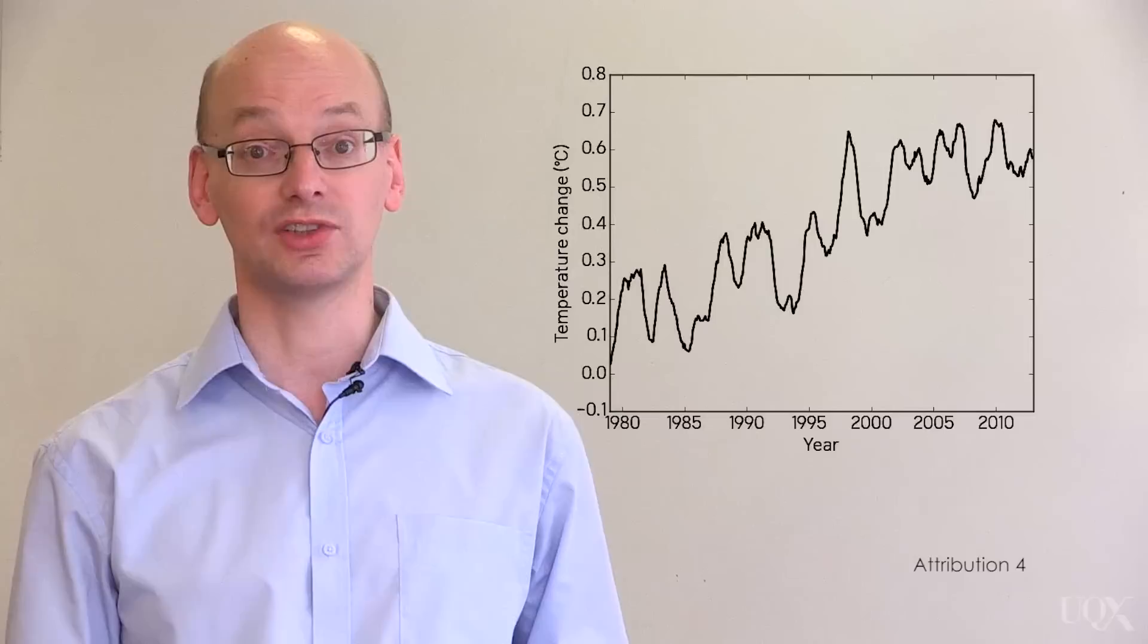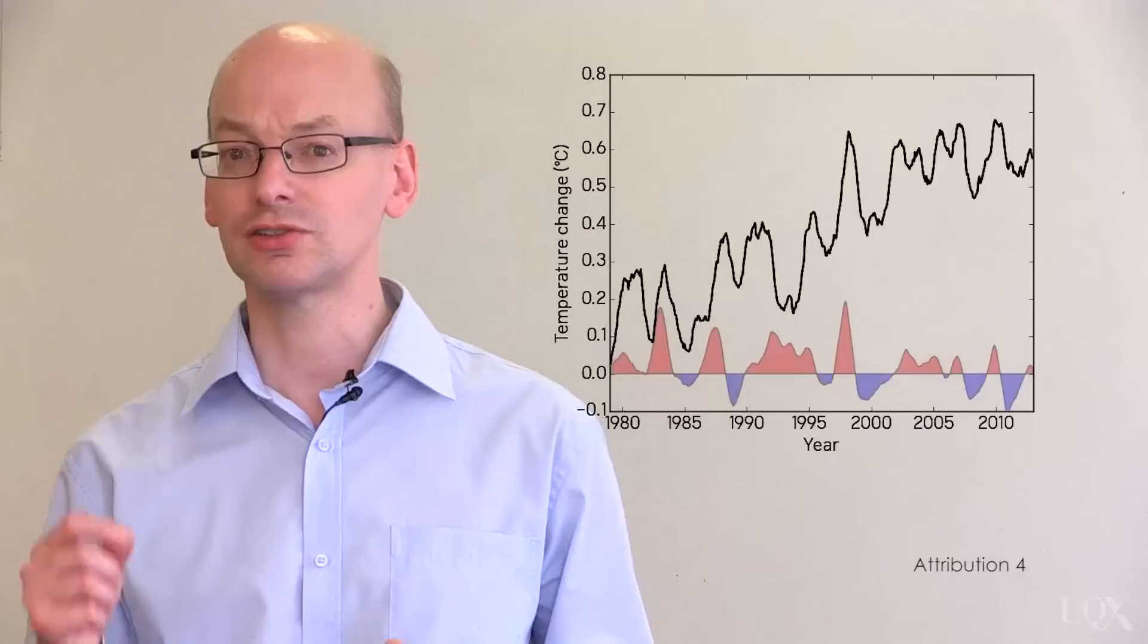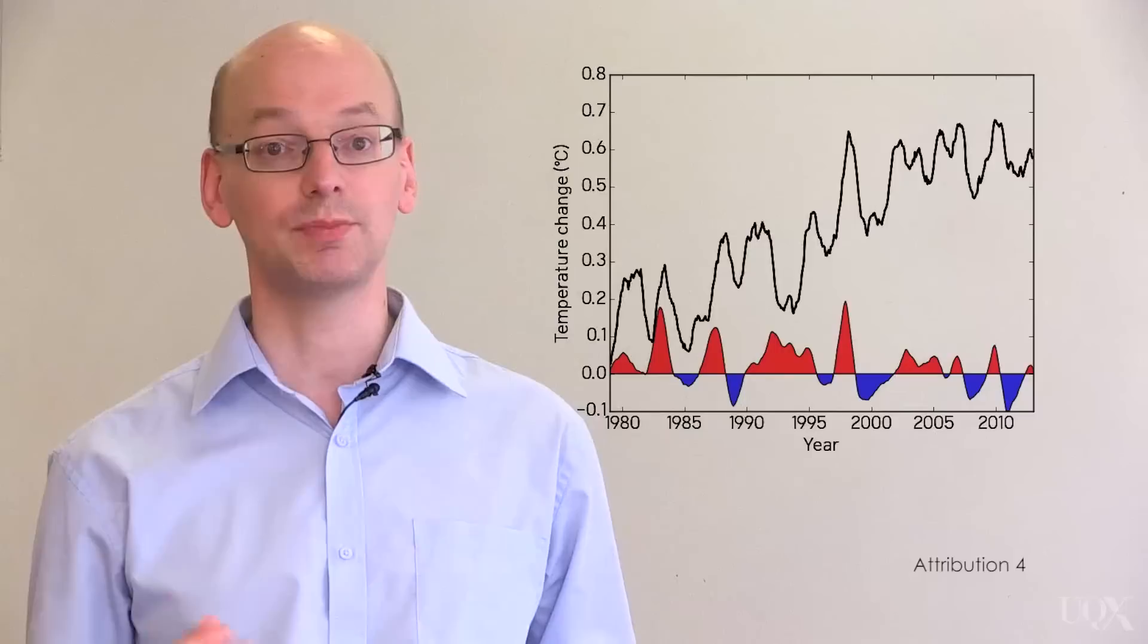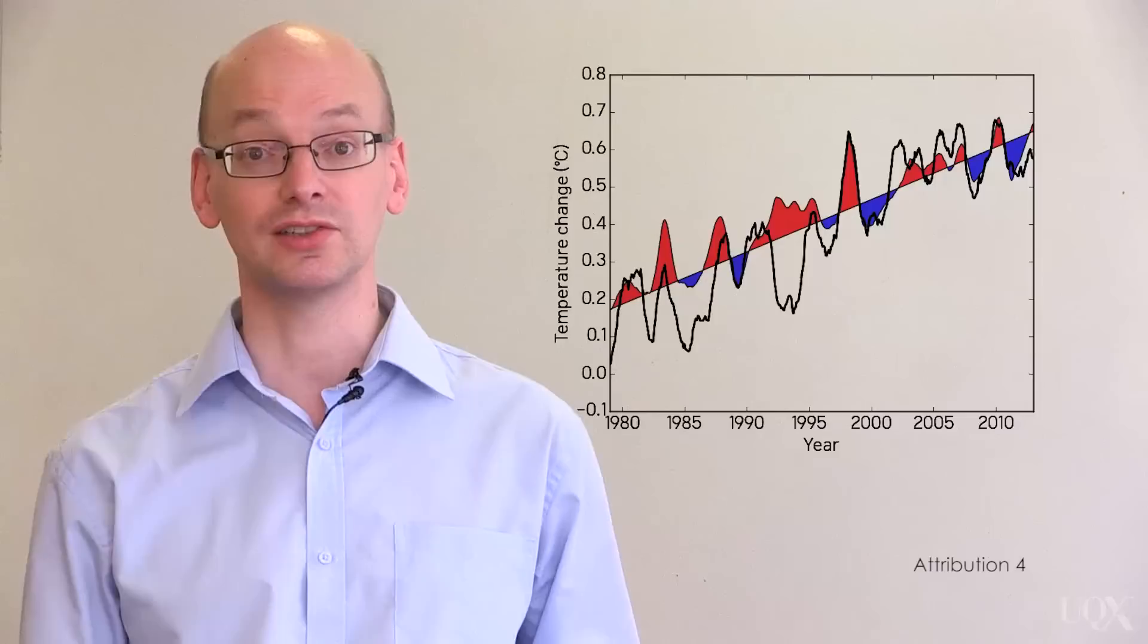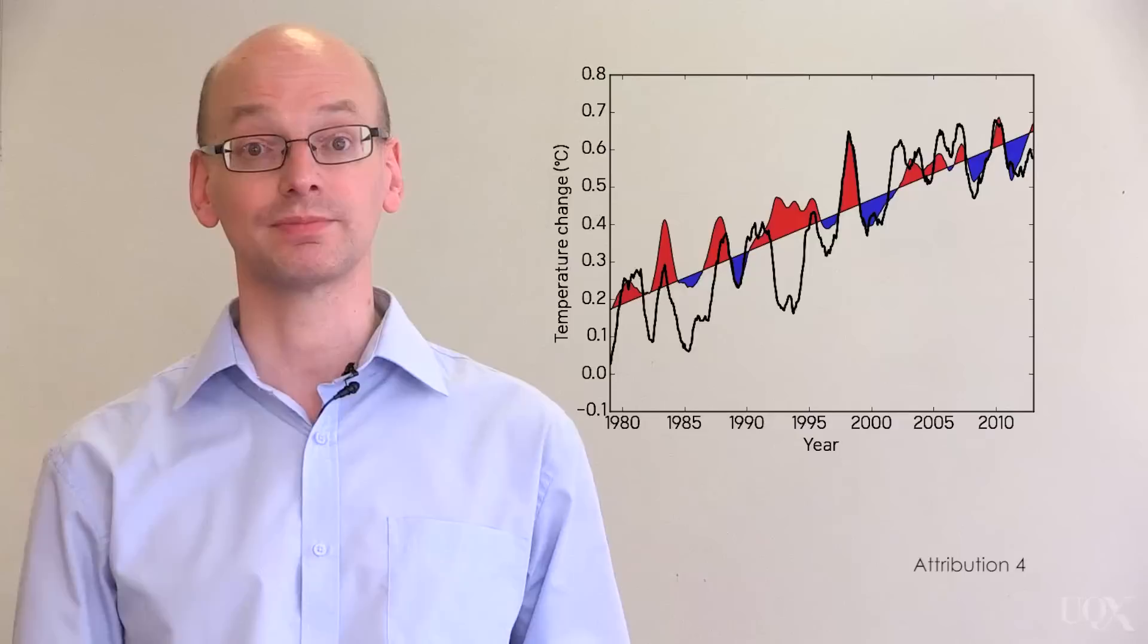If we compare past El Niño cycles with temperature changes over the past three decades, we can see that there is a strong relationship between the two. El Niño years tend to be hot years. Recent years have been dominated by the cool phase of the cycle. This is responsible for some of the slowdown in warming.